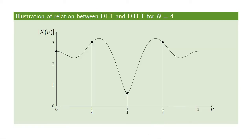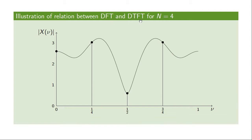Looking at this graphically: if we have a length-four sequence and plot the absolute value of its DTFT, the values computed by the DFT can be viewed as a sampling operation on this DTFT. The four DFT values correspond to four equally-spaced samples of the DTFT. In this sense, the DFT can be used to numerically compute the DTFT for finite-length sequences.